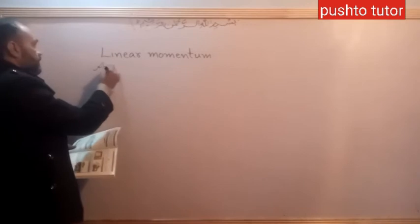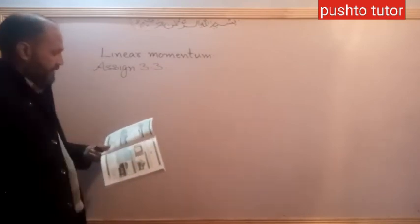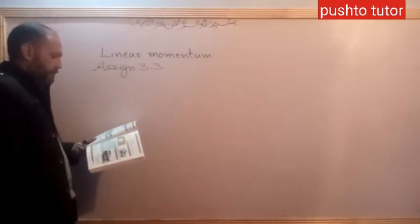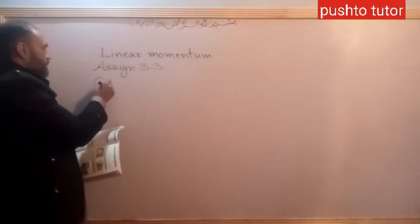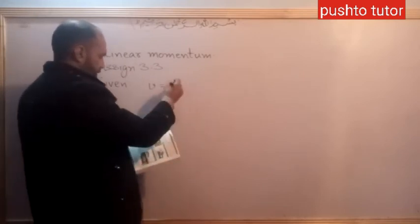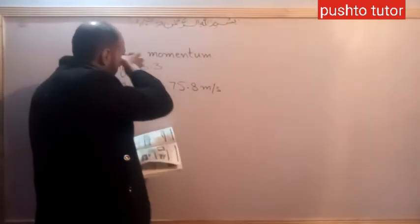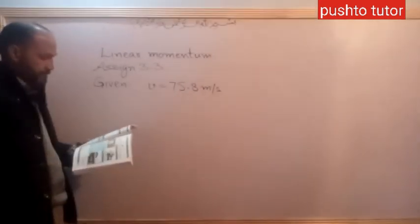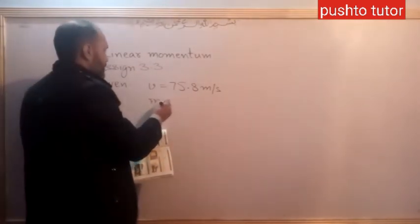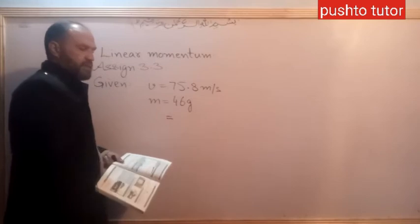The fastest recorded speed for a golf ball hit by a golfer is 75.8 meters per second. The velocity is given as 75.8 meters per second. The mass of the golf ball is 46 grams, which converts to 0.046 kilograms.